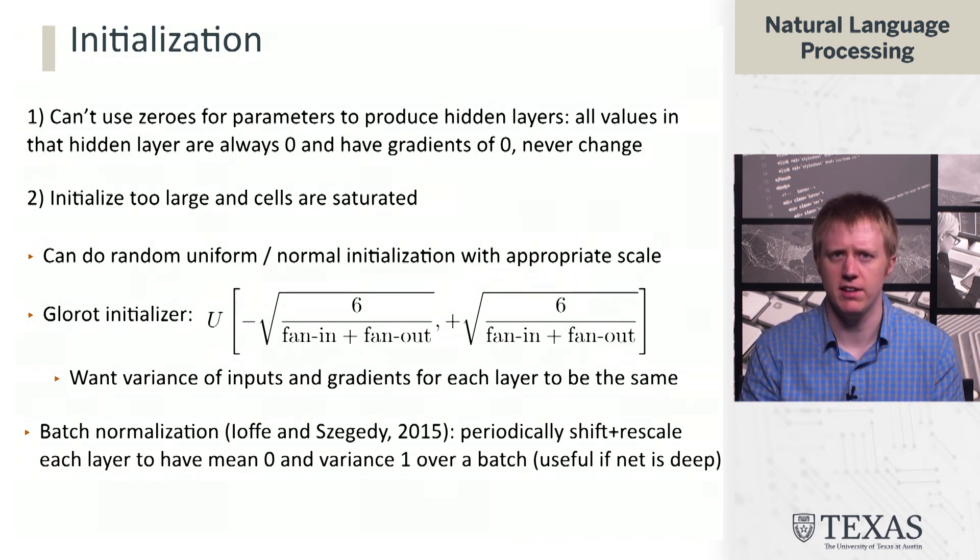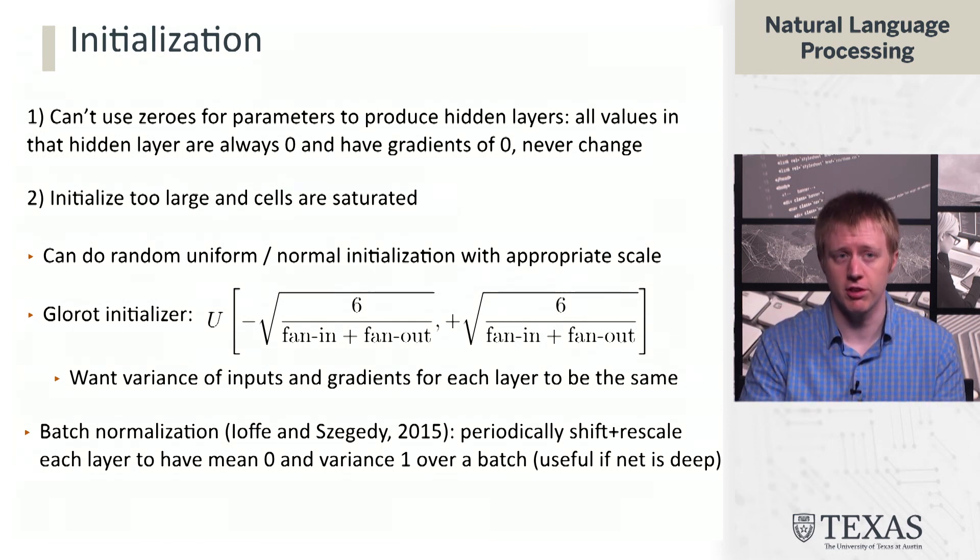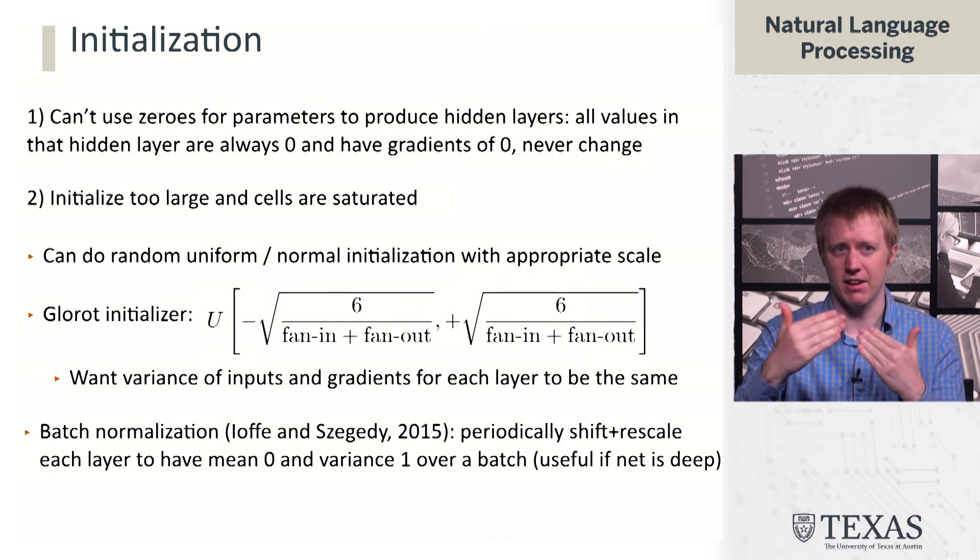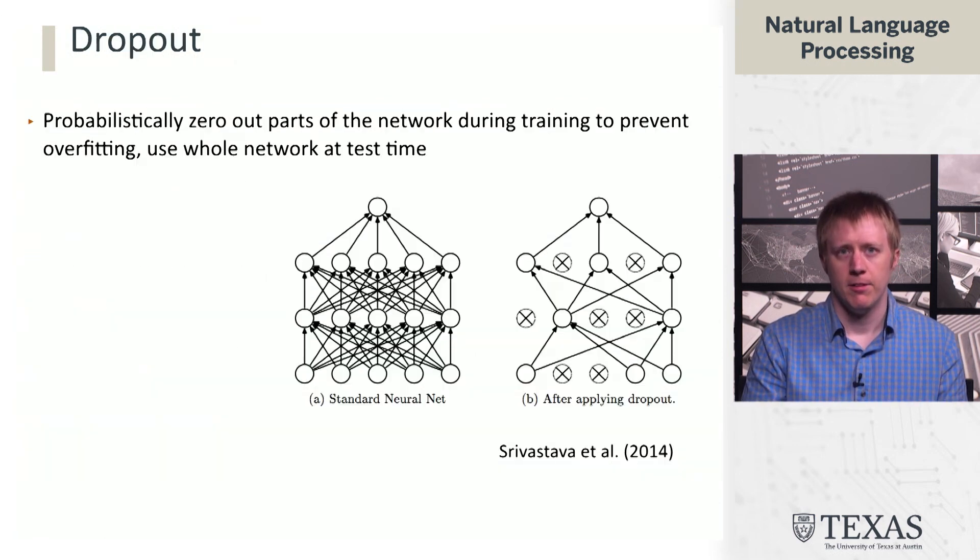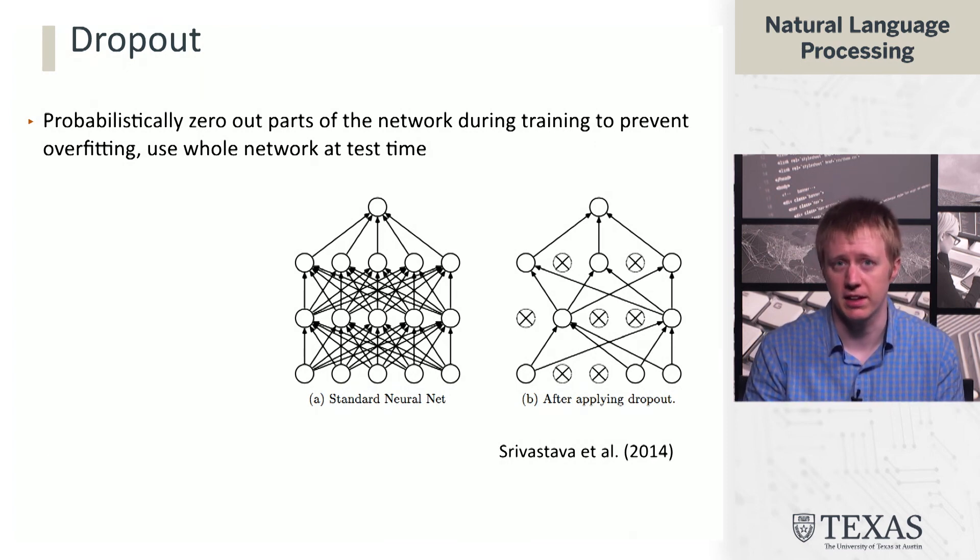There's a more sophisticated take on this sort of idea, not for initialization, but during learning something called batch normalization, where we take each layer's activations and we shift and rescale them across a batch so that they have mean 0 and variance 1. This is not going to show up that much in this course. It's much more of a consideration in computer vision where if you have very deep networks, you need to think about how to balance the optimization across these different layers. So that's what we're going to say about initialization. There's various preconstructed schemes that you can use, but it is important to use something and not just initialize to 0.